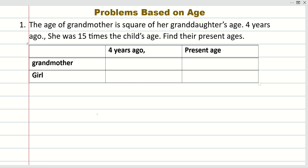Welcome students. Today we are going to tackle a problem based on age. Let us read the sum first: the age of the grandmother is the square of the granddaughter's age. So we will take the granddaughter's age as x, and then the grandmother's age will be x squared.